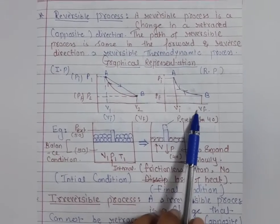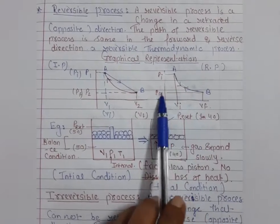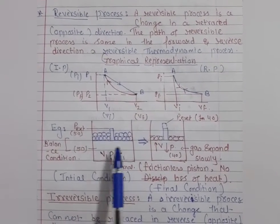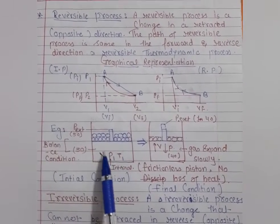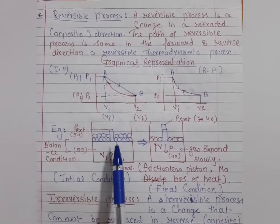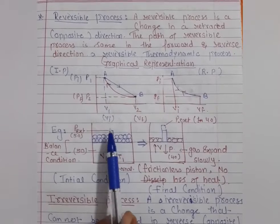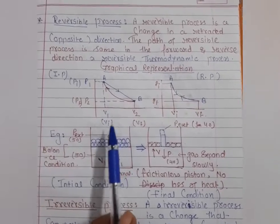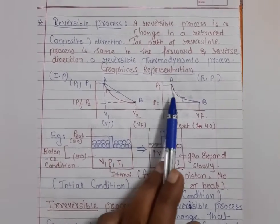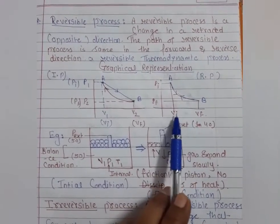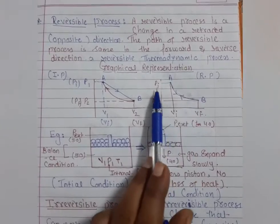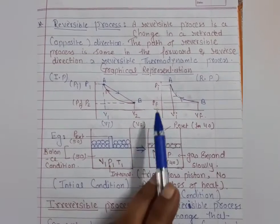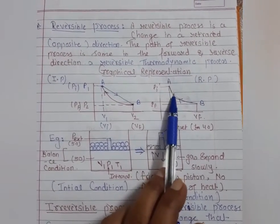At point B, the volume is VF — that is the final volume — and at that time the pressure also changes. Consider any container with gas molecules inside having volume, temperature, and pressure. When we apply external pressure on the piston and the piston moves in the upward direction, the expansion of the molecules happens. So from initial to final, expansion happens, pressure decreases, and volume increases.